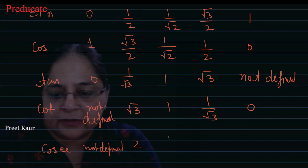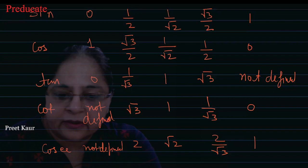Then cosec 45 degree is root 2. And cosec 60 degree is 2 upon root 3. And cosec 90 degree is 1.